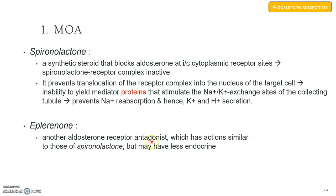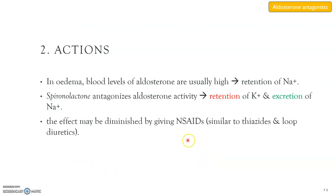Eplerenone is another aldosterone receptor antagonist — it blocks the aldosterone receptor like spironolactone and has similar actions, but may have less endocrine effects. Its actions are mainly in edema where blood levels of aldosterone are very high, leading to retention of sodium. The effects of both drugs may be diminished by NSAIDs, due to the reduction in renal blood flow — similar to thiazide and loop diuretics.